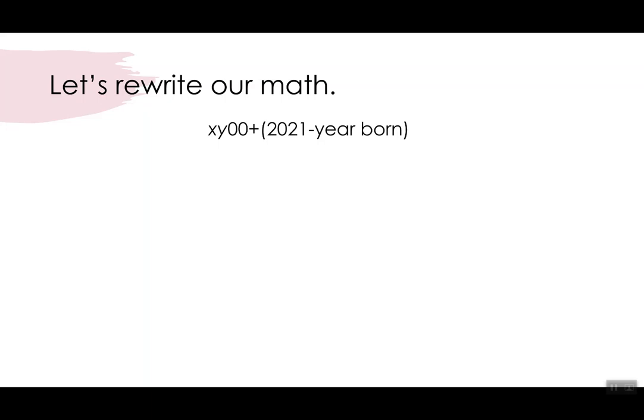And I put 2021, but this would work next year in 2022 as well. But you put the year minus the year you were born. And of course, it's going to give your age. So let's call your age AB. Well, if I add XY00 to AB, I get XYAB. And there's your soulmate.